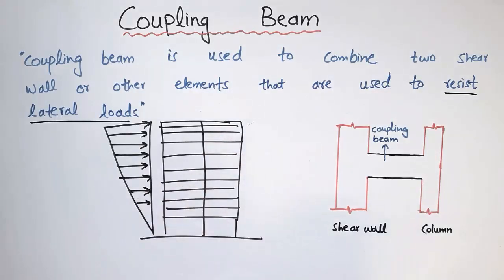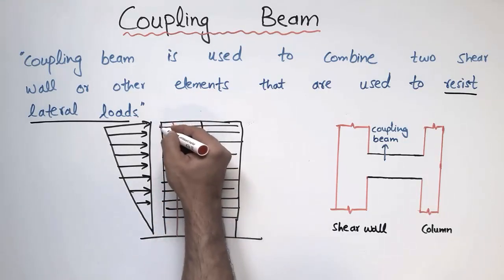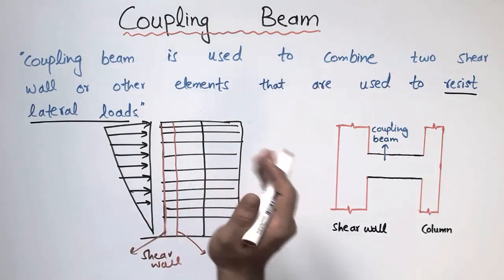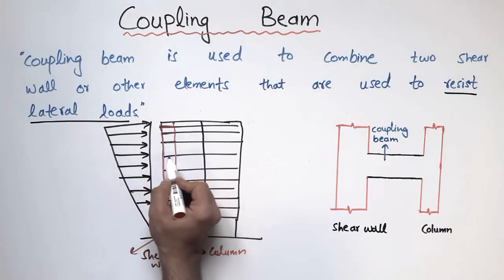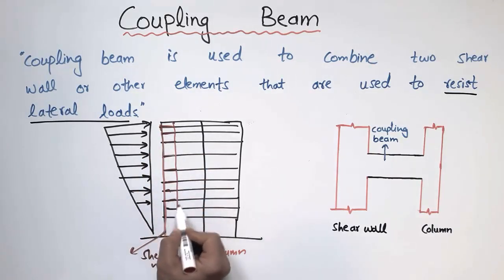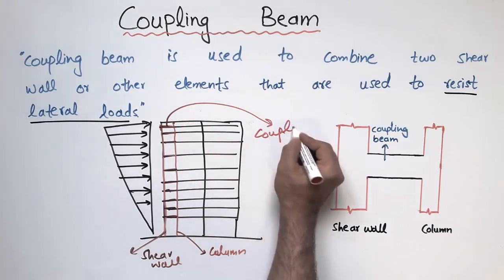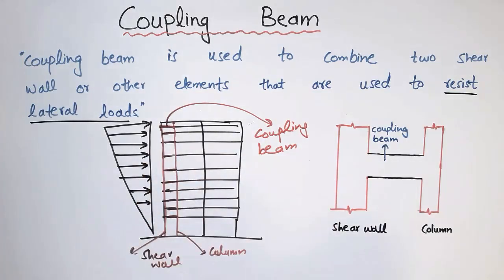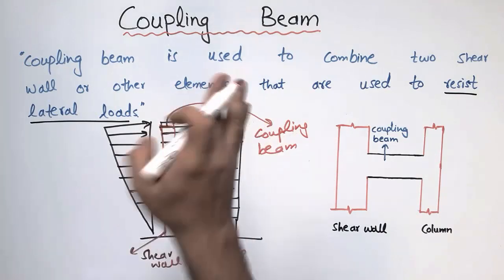Let's draw where we have to provide the coupling beam. Consider another column along with a shear wall — the shear wall is provided on the left side, and this is the column. To increase the stiffness of the structure, we connect this shear wall with the column using a horizontal member, which we call the coupling beam. This structure now has higher stiffness than it had without the coupling beam. This coupling beam is only provided in high-rise buildings to increase stiffness and reduce the overturning effect.